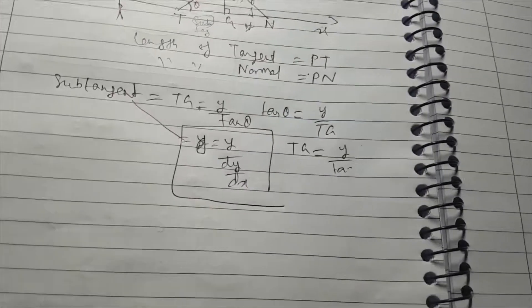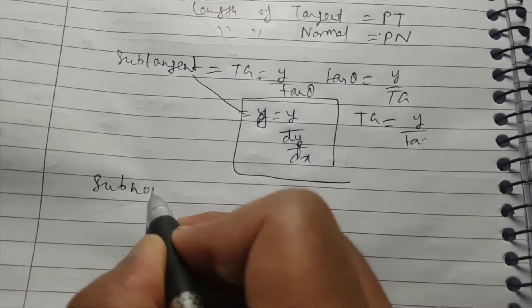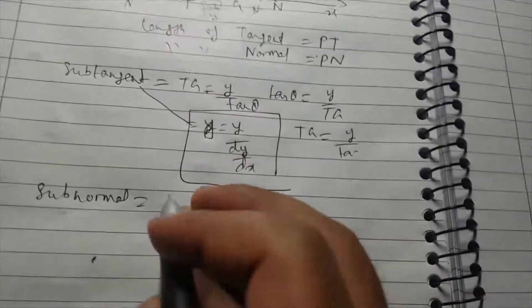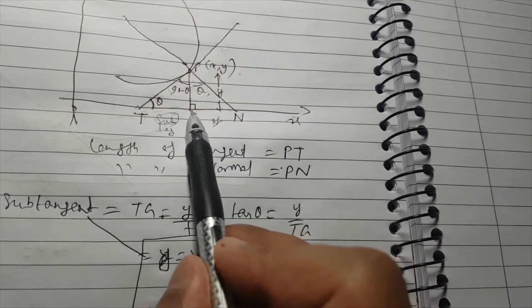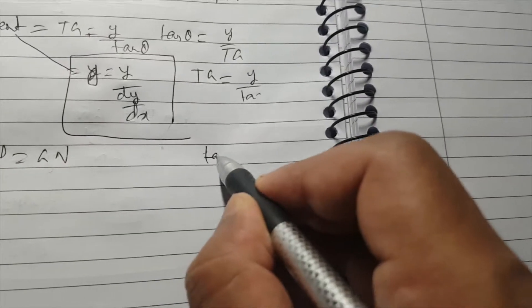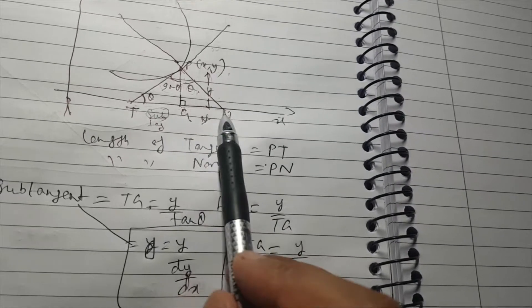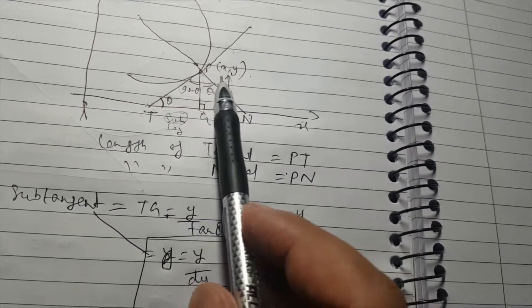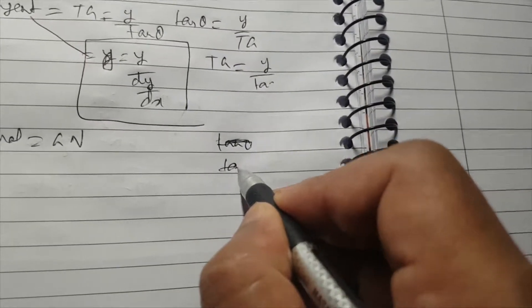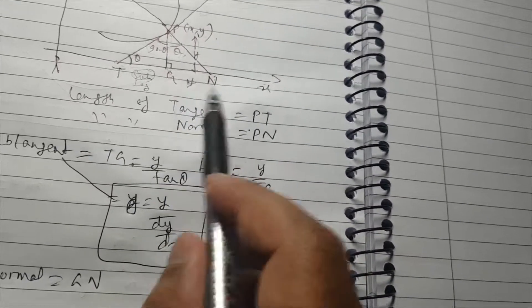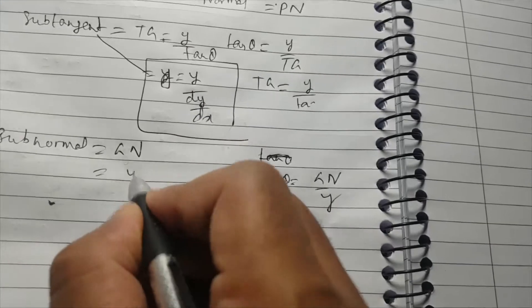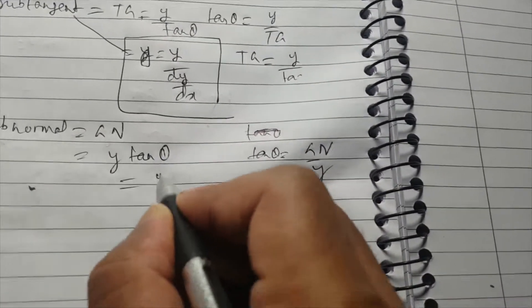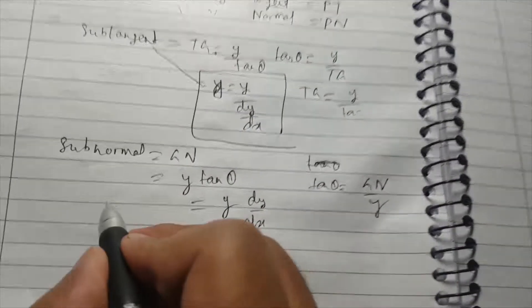Now for the sub-normal GN, we again use trigonometric ratios. This time the angle is at G, so tan(theta) equals GN over y. Therefore GN equals y·tan(theta), which equals y·(dy/dx). So the sub-normal is y·(dy/dx).